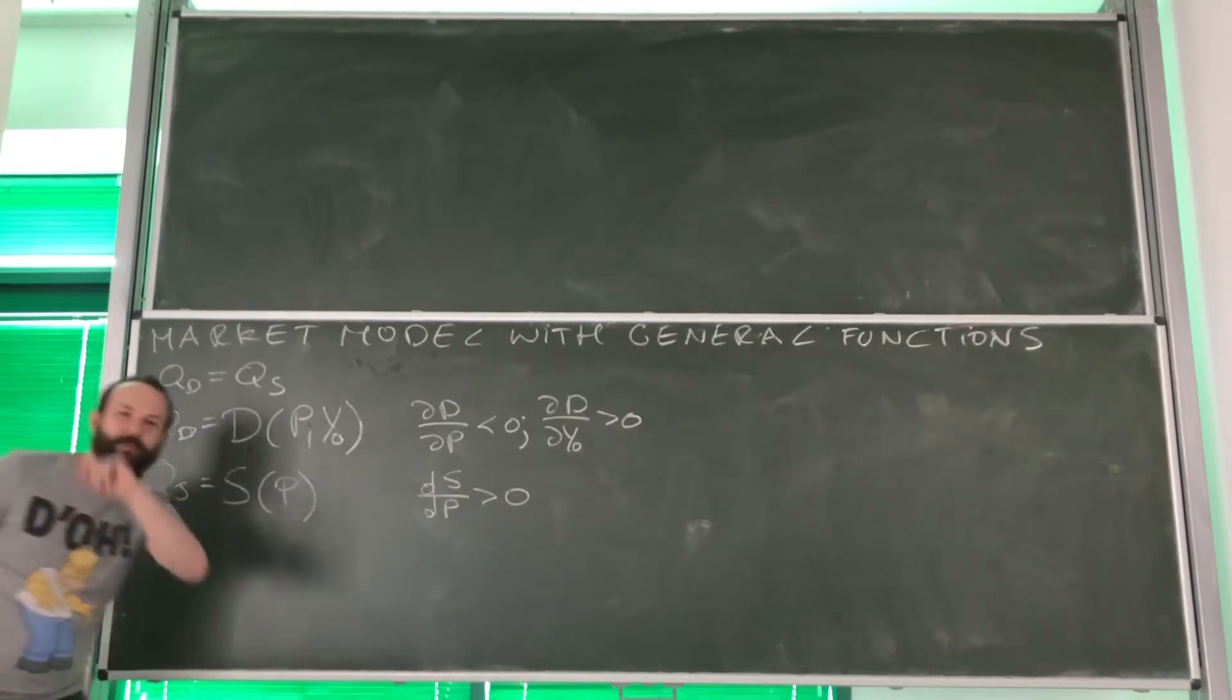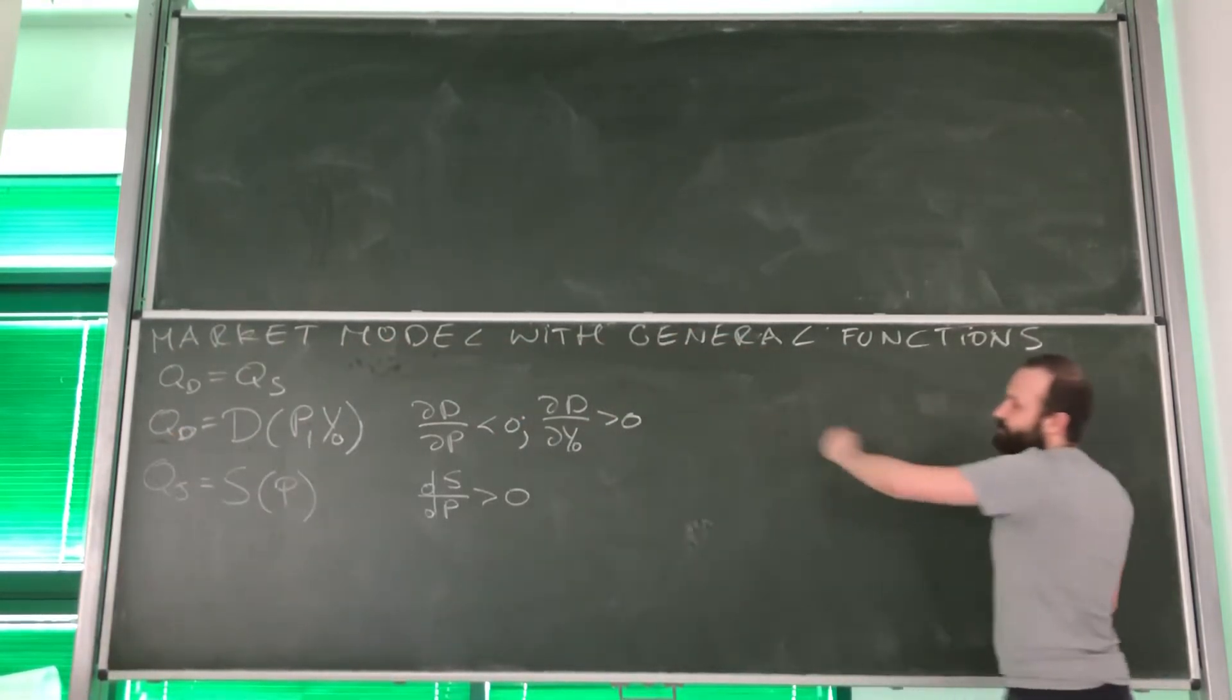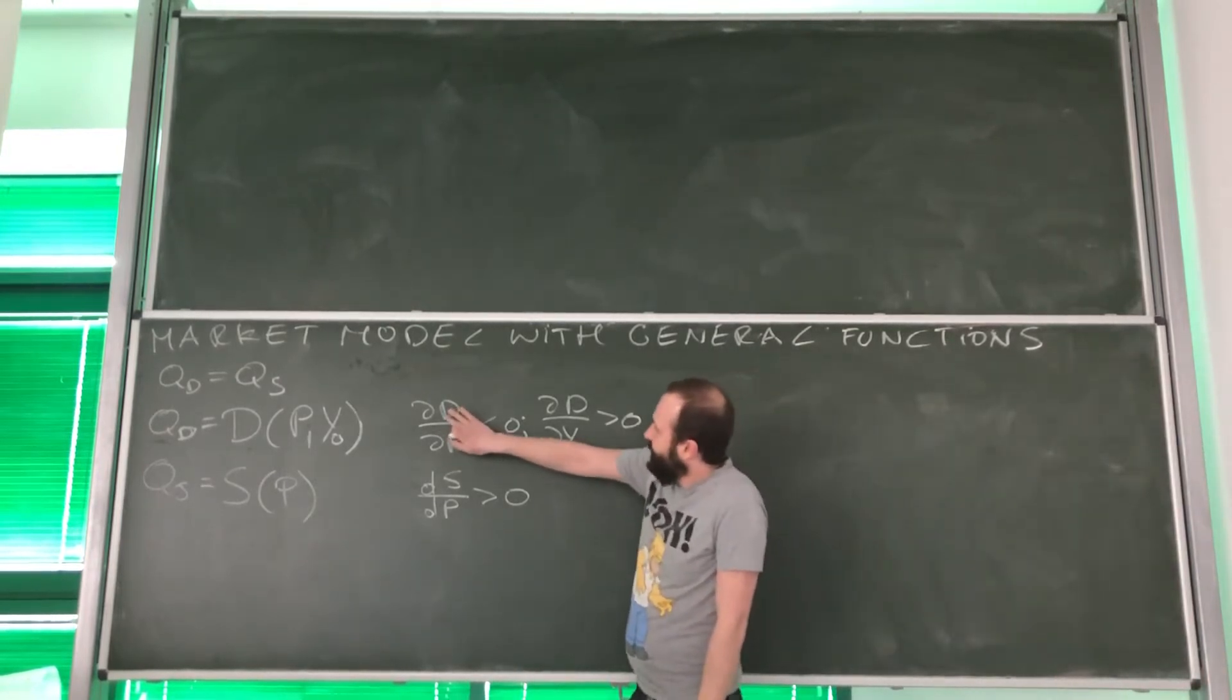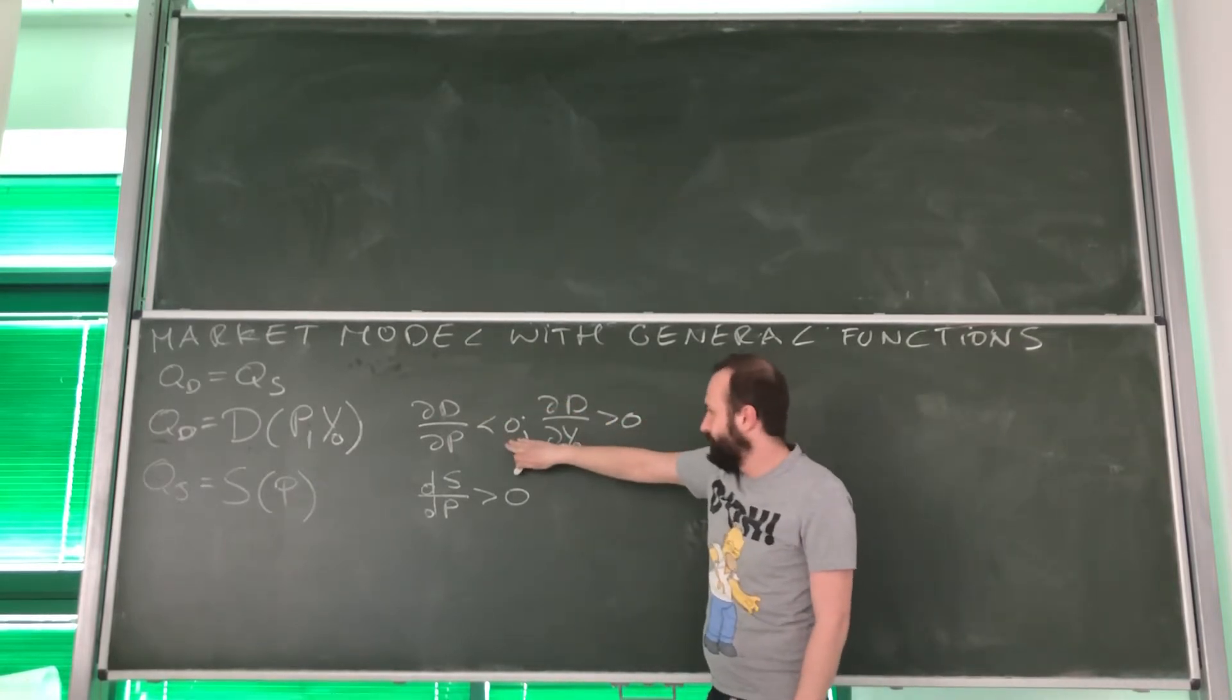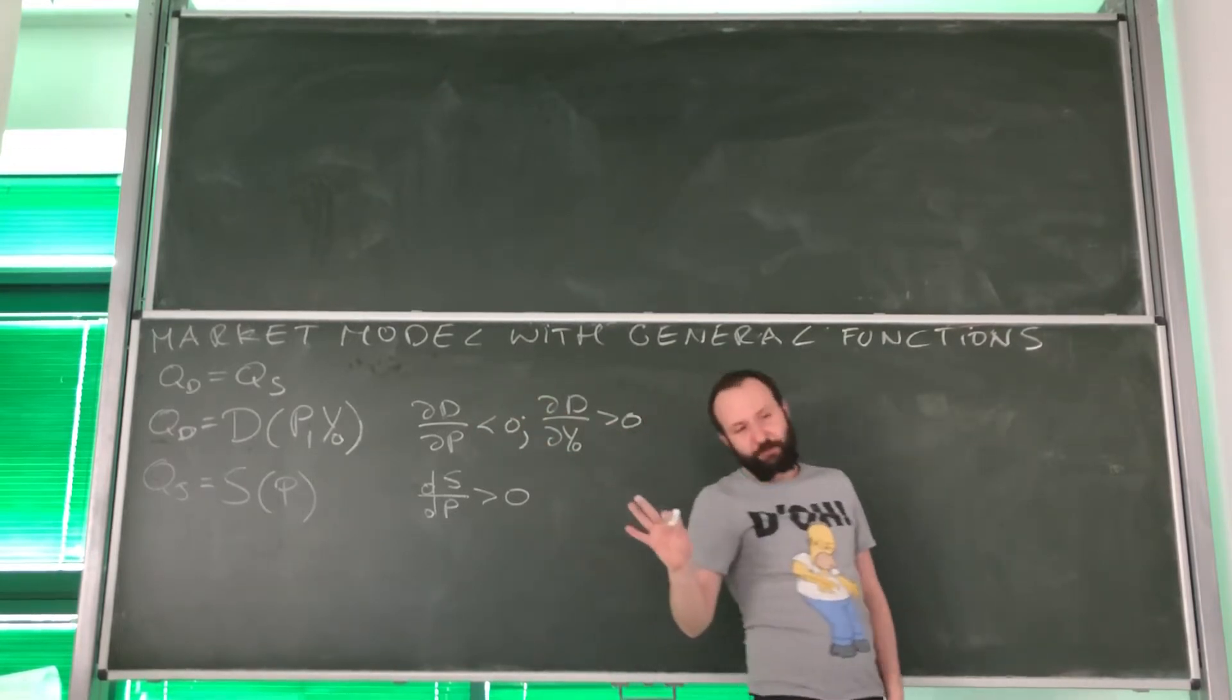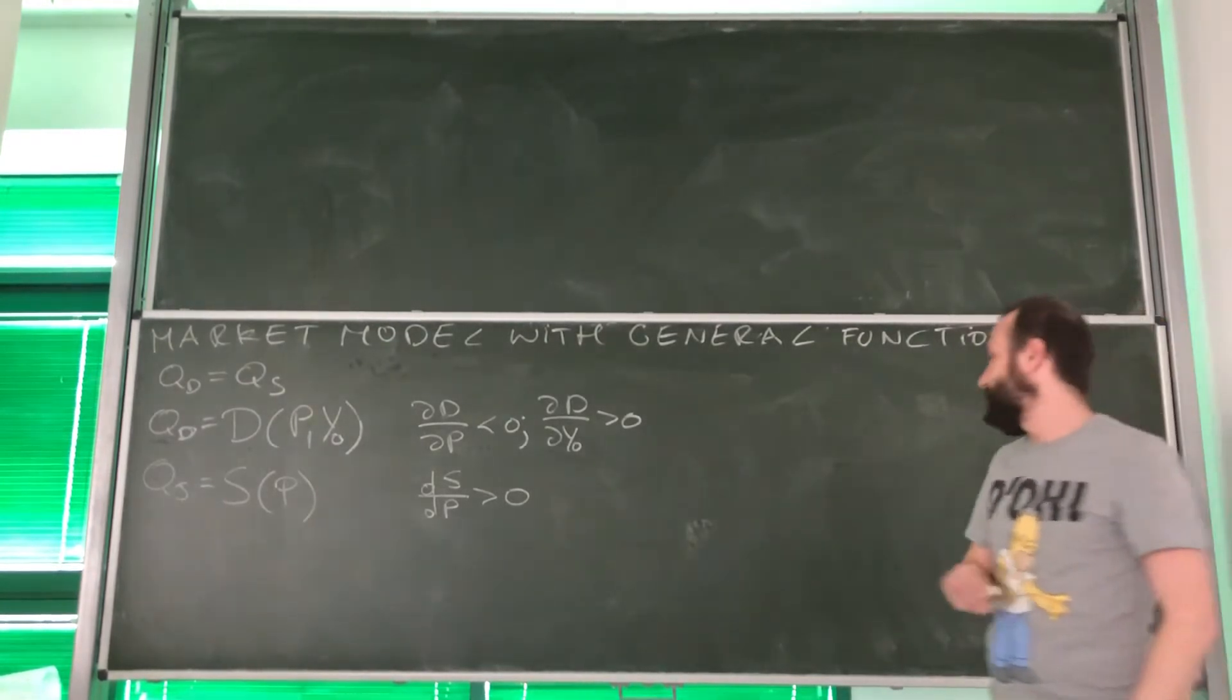However, we've got some information about it. And information is described by derivatives. Look, here we've got information that the partial derivative of demand with respect to price is negative. What does it mean? The higher the price, the lower the demand. It makes perfect sense, right? The higher the price, the lower the quantity demand.